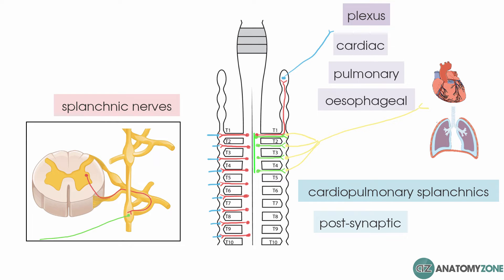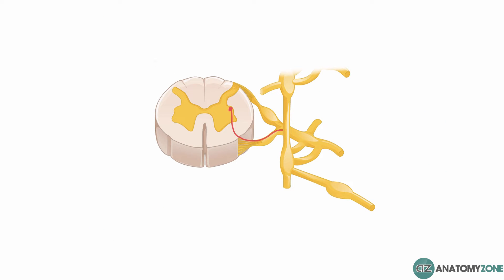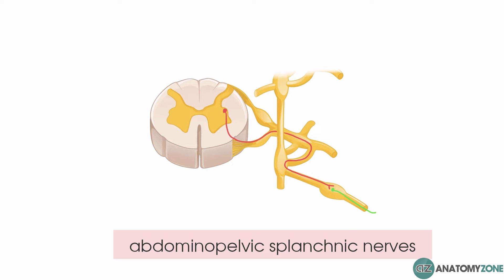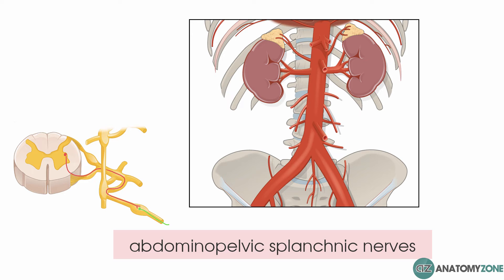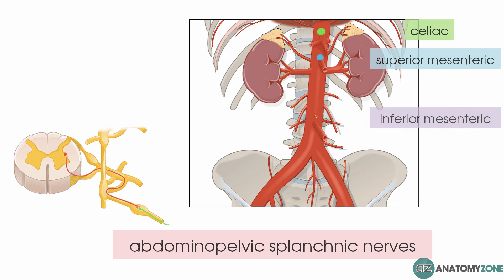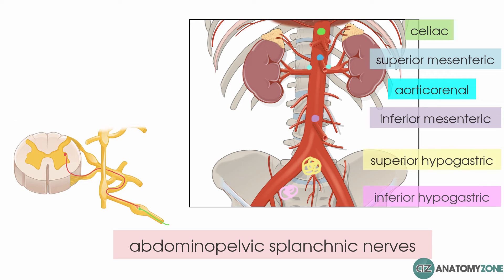Now we will take a look at the case where the preganglionic fibre doesn't synapse in the sympathetic trunk at all. Instead, it passes straight through it and forms a synapse in a peripheral ganglion. Again, these autonomic neurons are not travelling in spinal nerves, so they are known as splanchnic nerves. These splanchnic nerves supply the abdominal and pelvic viscera and are known as abdominopelvic splanchnic nerves. They project to ganglia which are located in front of the vertebra, around the various branches of the aorta — the celiac ganglia, the superior and inferior mesenteric ganglia, the aorticorenal ganglia, and the superior and inferior hypogastric ganglia. You'll also hear these referred to as plexuses.